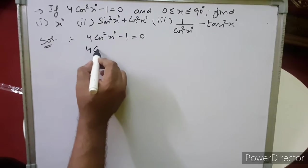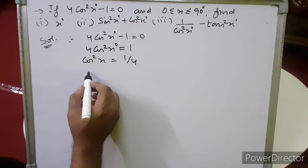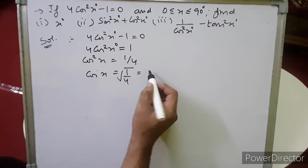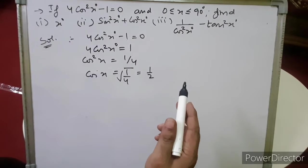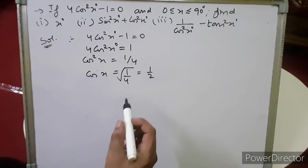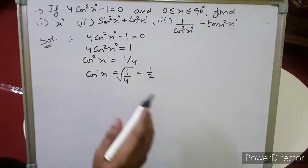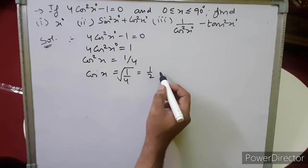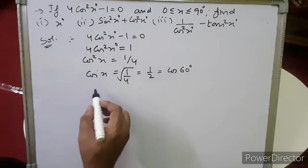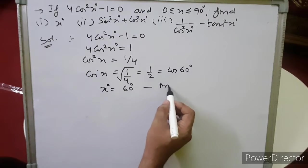From 4cos²x − 1 = 0, transfer 1: 4cos²x = 1, so cos²x = 1/4. Taking the square root of both sides, cos x = 1/2. We ignore the negative value because x is between 0° and 90°, so all trigonometrical ratios are positive in the first quadrant. Since cos 60° = 1/2, by comparing, x = 60°.